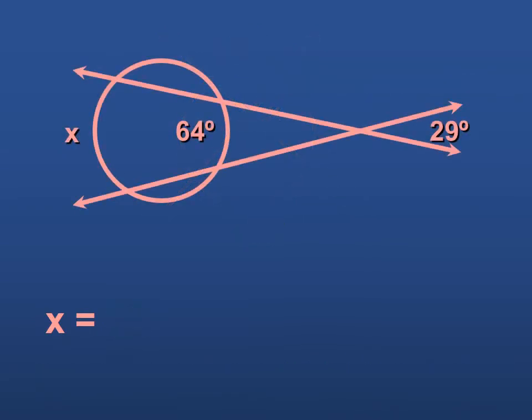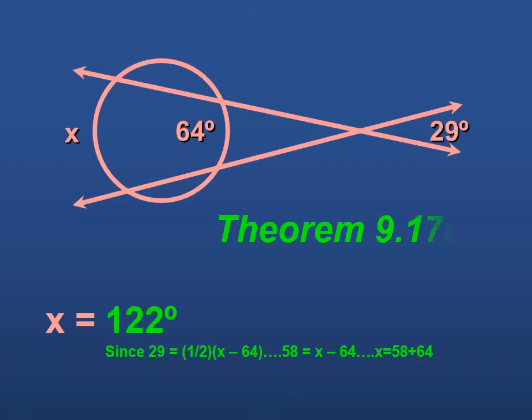Remember, this angle here is half of the difference of these two arcs. But we don't know this angle. We do know that it's a vertical angle to this angle 29. And vertical angles are congruent, which means that this is 29. Therefore, 29 is equal to half of X minus 64. So we use algebra, multiply both sides by 2, so we get 58 equals X minus 64. Add 64 to both sides, and we end up with 122.